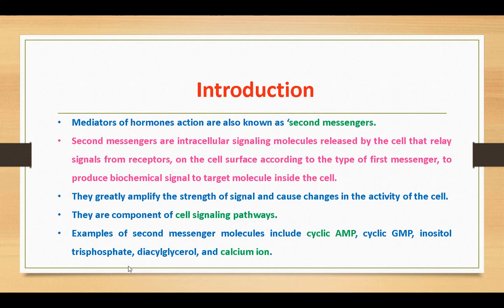Number two: they can be stored in special organelles and quickly released when needed. They greatly amplify the strength of the signal and cause changes in the activity of the cell. They are components of cell signaling pathways. Examples of second messenger molecules include cyclic AMP, cyclic GMP, inositol trisphosphate, diacylglycerol, and calcium ion.